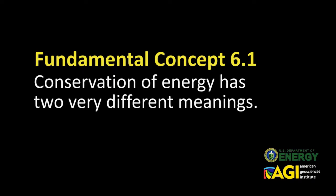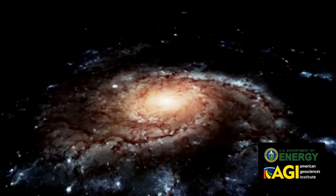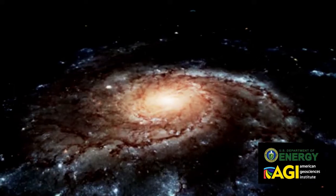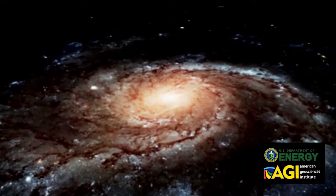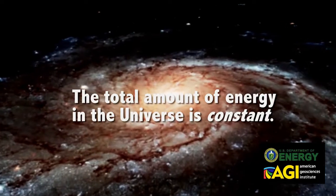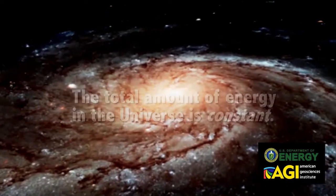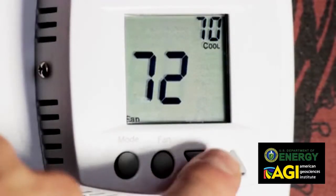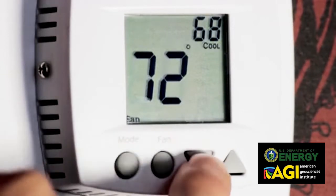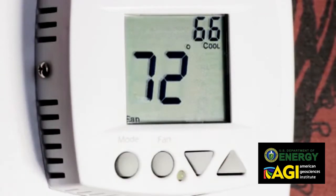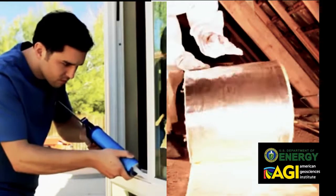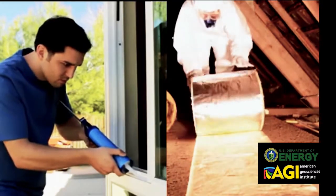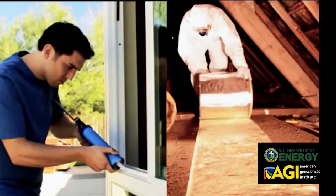Conservation of energy has two very different meanings. There is the physical law of conservation of energy, which says that the total amount of energy in the universe is constant. Conserving energy is also commonly used to mean the decreased use of societal energy resources. When speaking of people conserving energy, this second meaning is always intended.